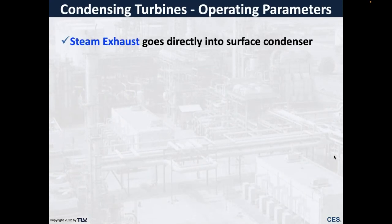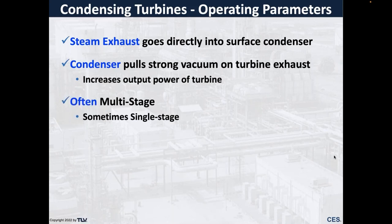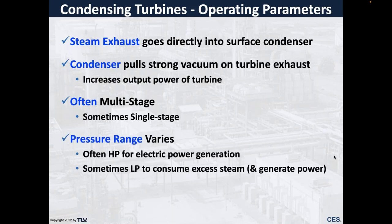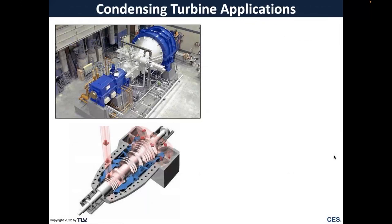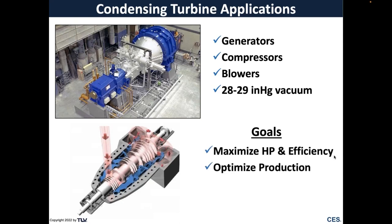For condensing turbines, the exhaust goes directly into a surface condenser. The condenser pulls a strong vacuum when working properly. These are often multi-stage and the pressure range varies. A condensing turbine application is rather sophisticated — used for things like wet gas compressors and main air blowers, which can pull 28 to 29 inches of vacuum. The goals are to maximize horsepower and efficiency and to optimize production.